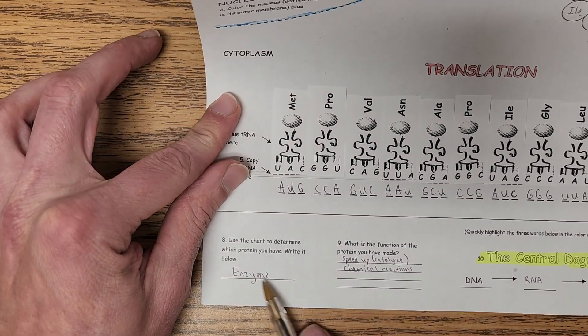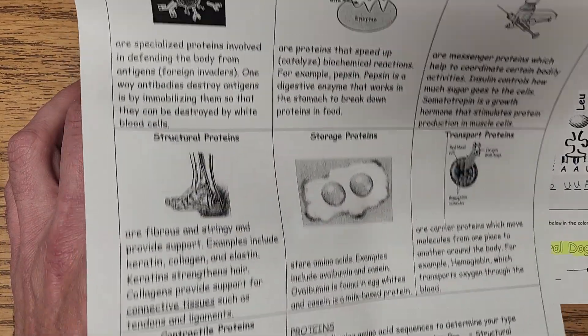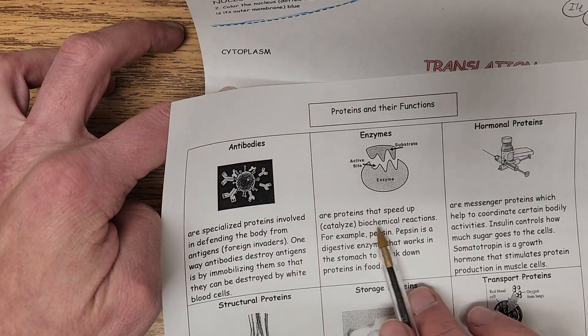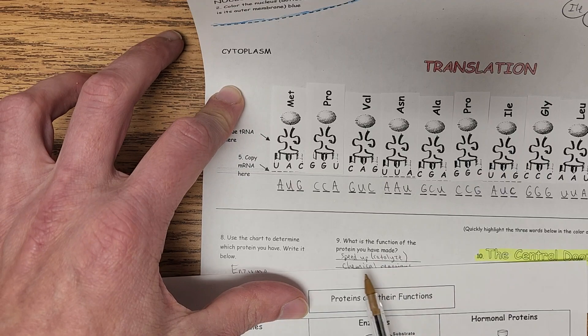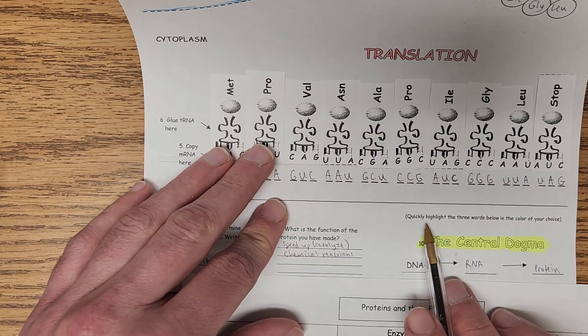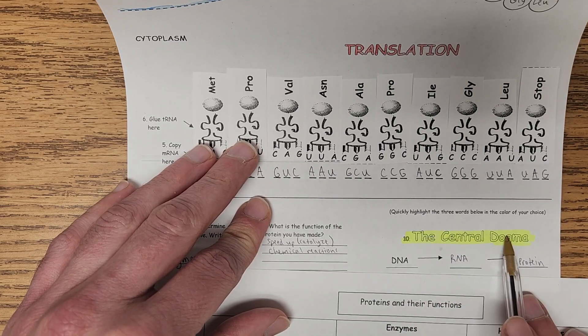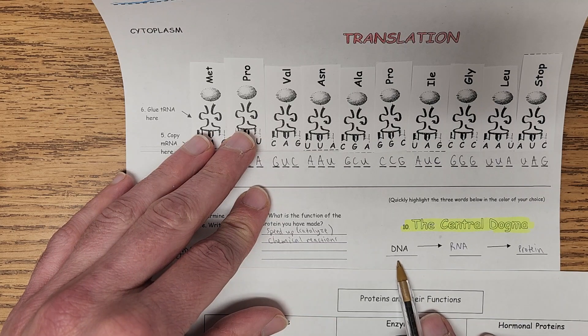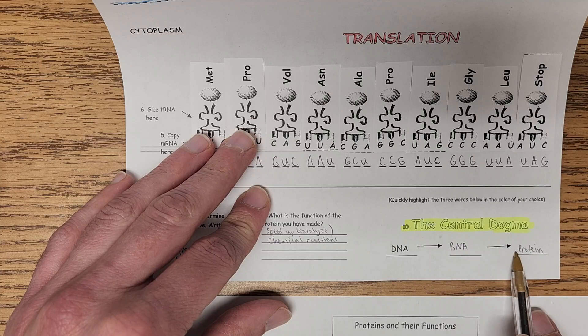And then step nine. What is the function? I go back here to that same chart where I looked it up. And then right here is enzyme, and there's the function. Speeds up, catalyzes biochemical reactions. So I put that there, and then biochemical reactions. Direction nine is followed by direction ten. Quickly highlight the three words below. So one, two, three words. Highlight these three words. And then fill in the blank for the central dogma of genetics. DNA makes RNA, which leads to protein.